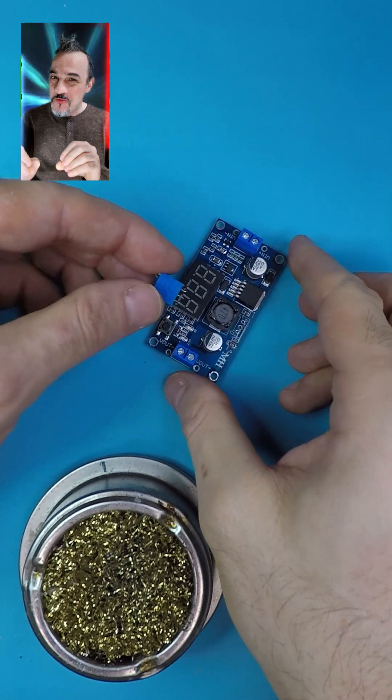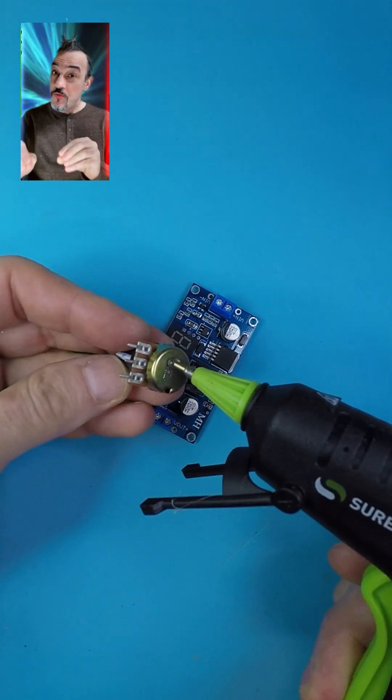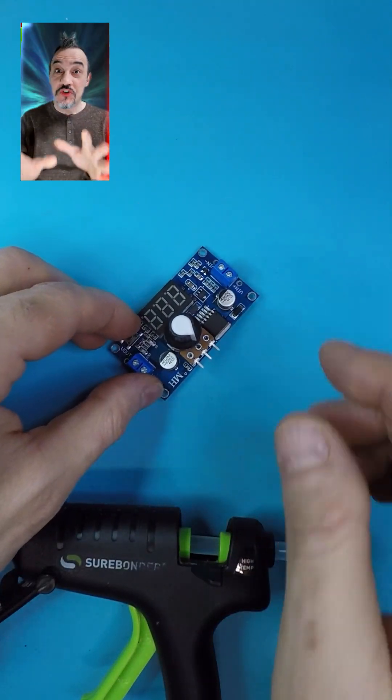In this project I use a step-down converter and replace its screw knob for easy adjustment of the output voltage by hand.